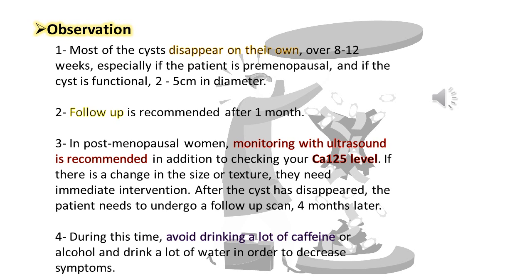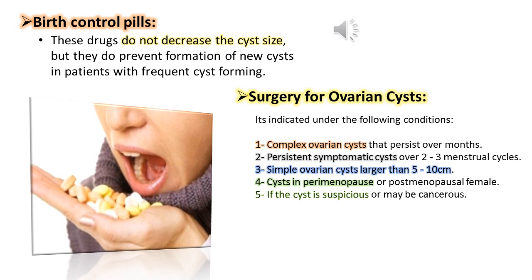During observation, avoid drinking a lot of caffeine or alcohol, and drink plenty of water to decrease symptoms. Birth control pills do not decrease the size of the cyst, but they prevent the formation of new cysts in patients with frequent cyst formation.